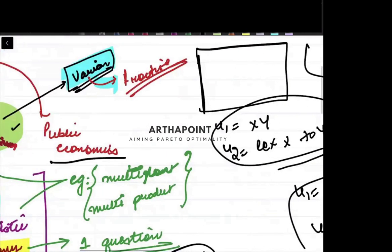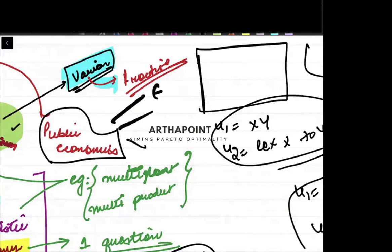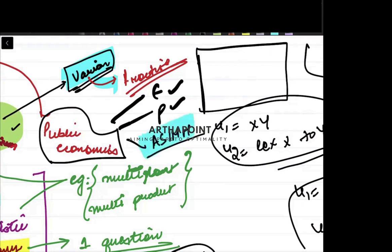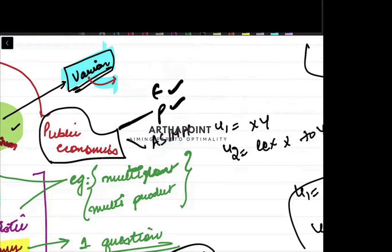The last part is public economics, which can be divided into three parts: externalities, public goods, and asymmetric information and moral hazard. Externalities and public goods have been asked in exams. Asymmetric information and moral hazard have not been asked, but we will not take any risk — you will cover all three topics from the point of view of your exam.